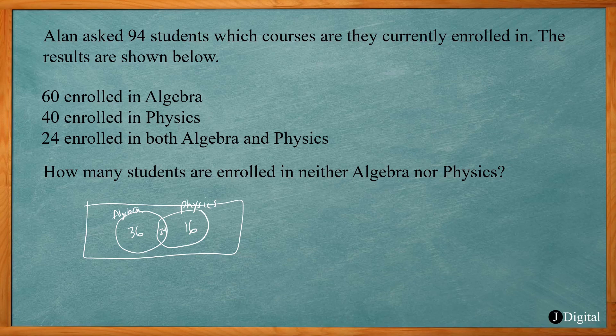Now if we add those up, that will tell us how many are in algebra, physics, or both. So 36 plus 24 plus 16, and that gives us 76.